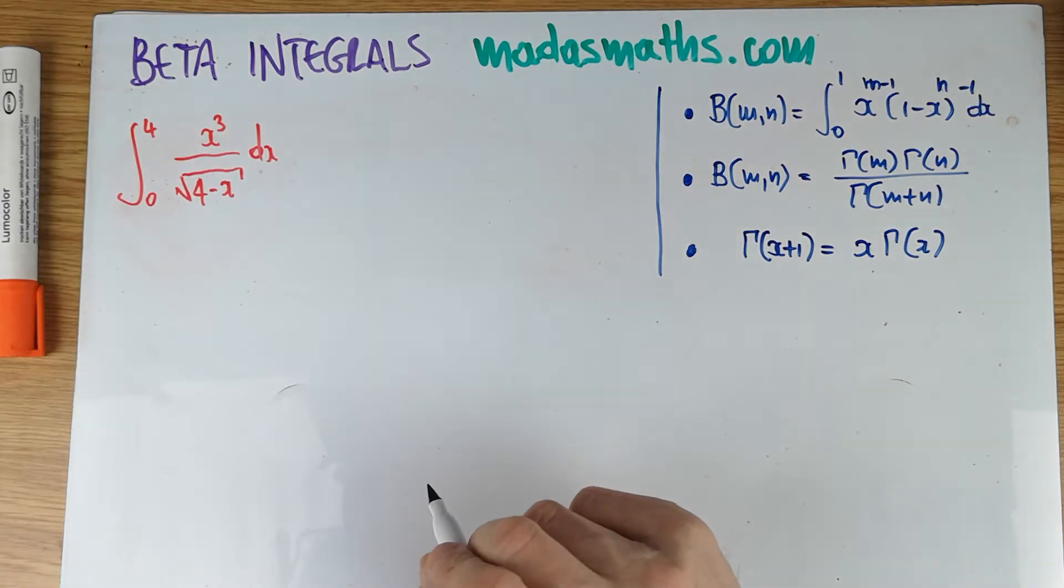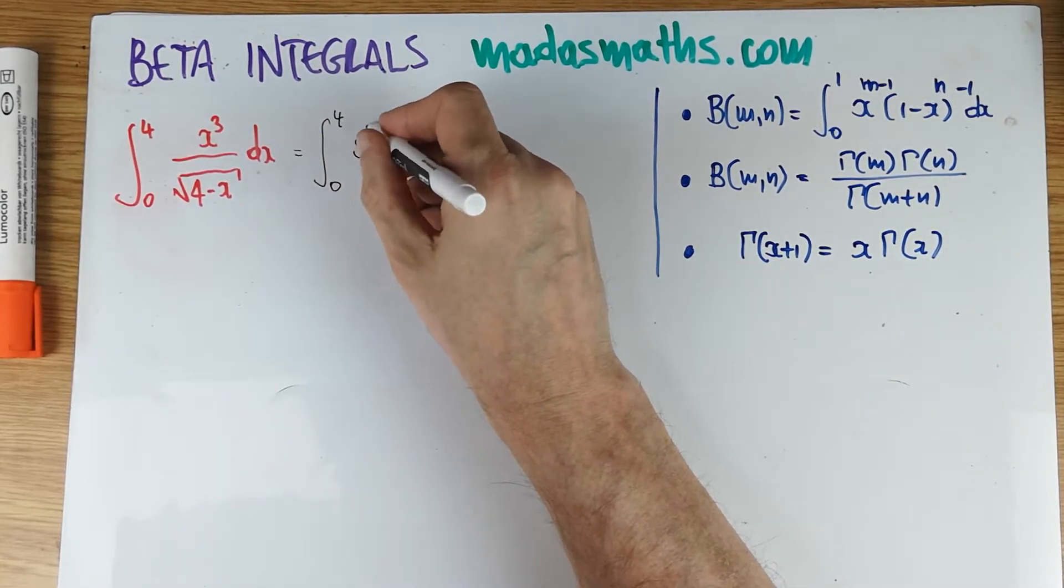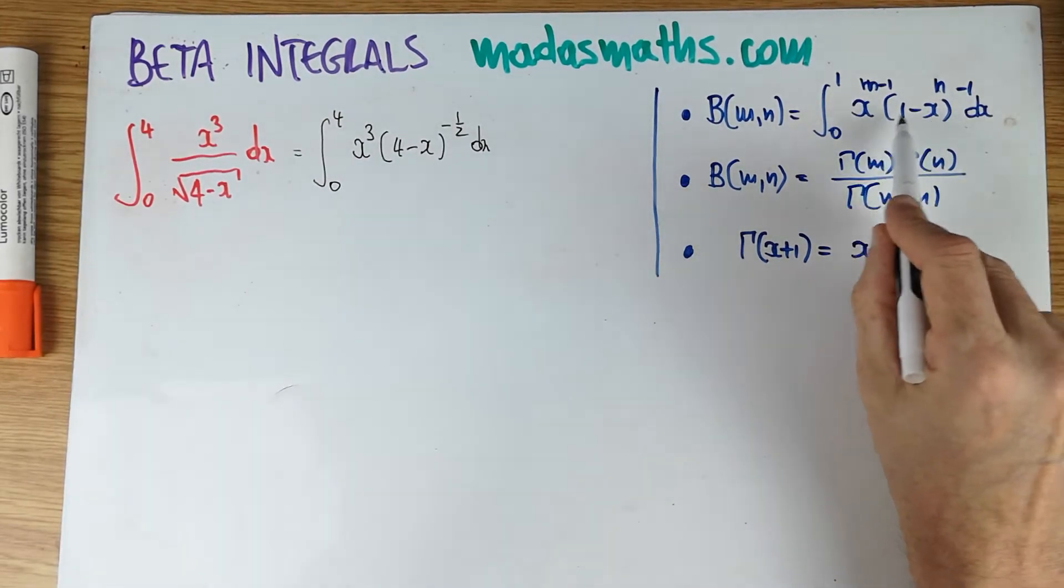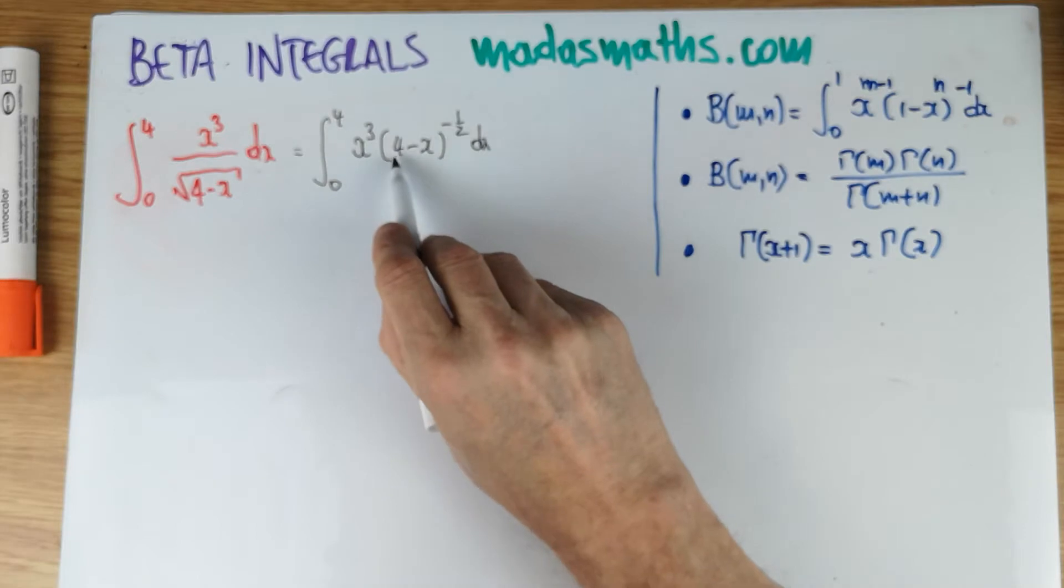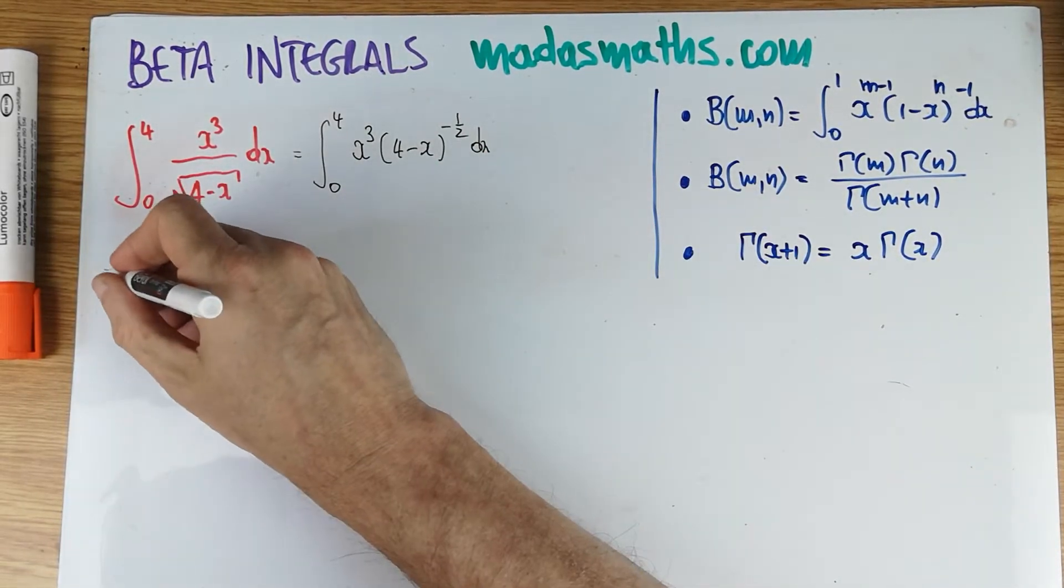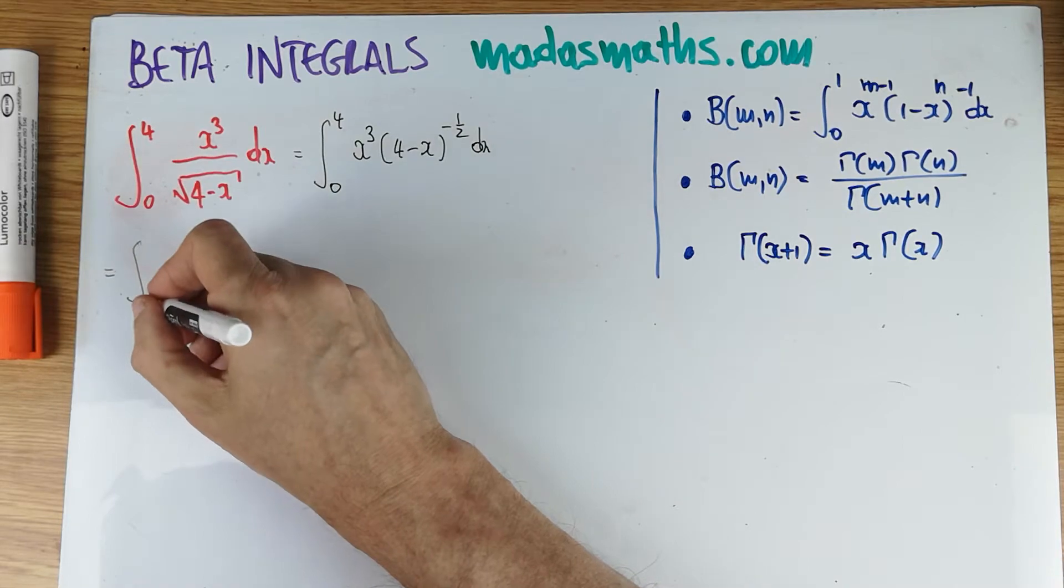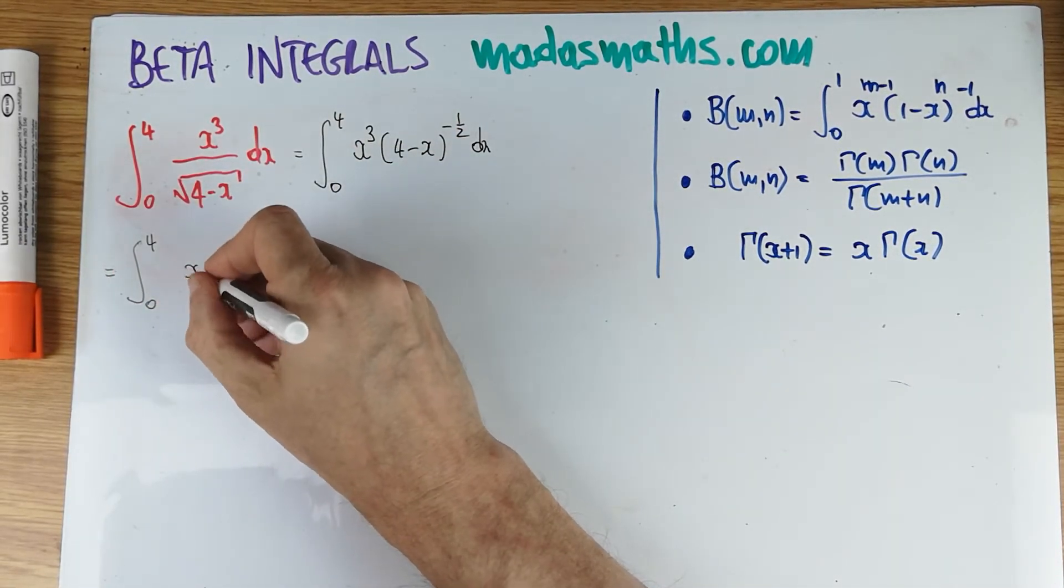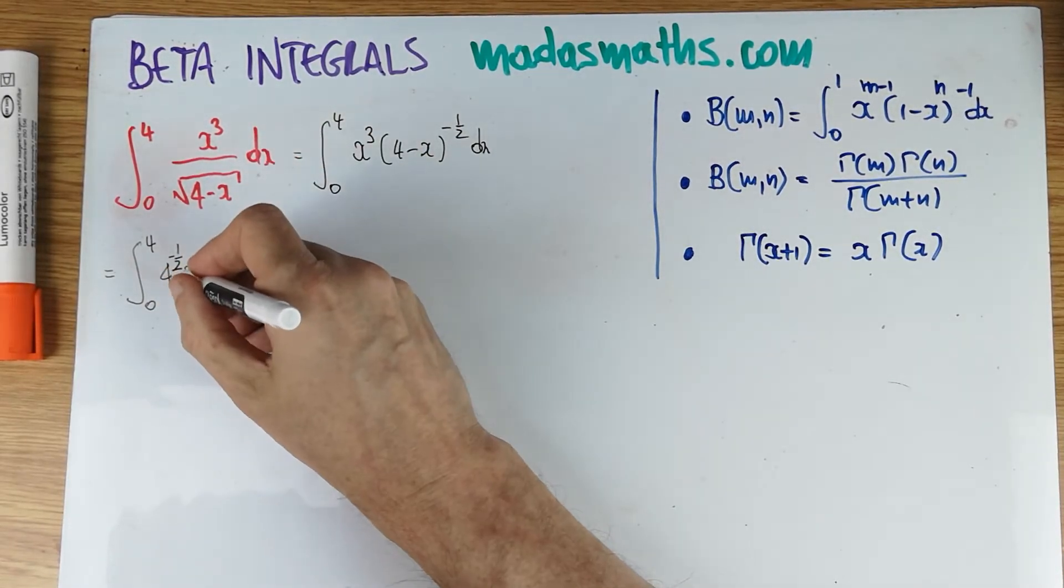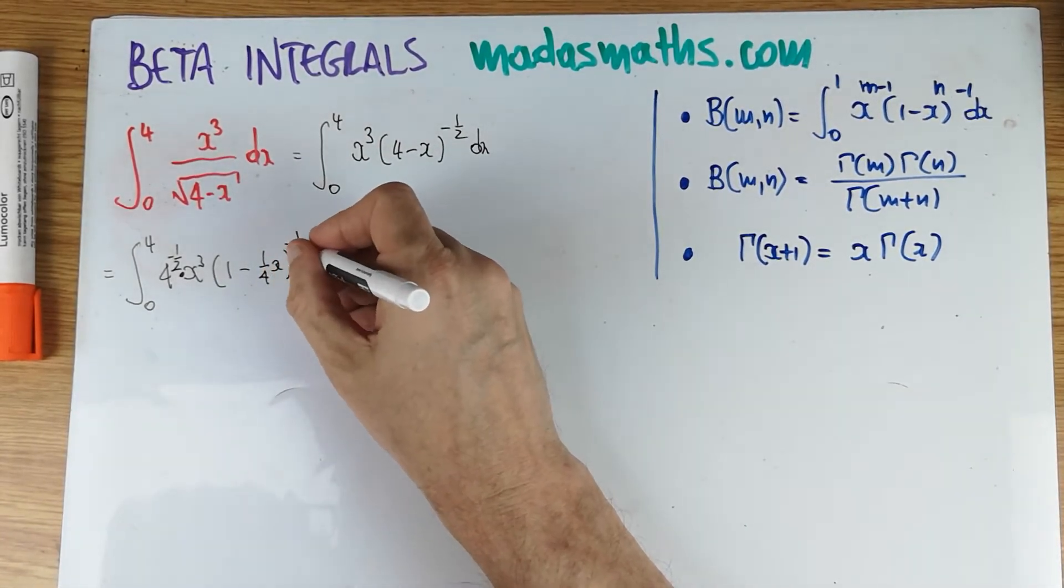Okay, so this particular integral. First of all, let's write it a little bit differently. So 0 to 4, x cubed times 4 minus x to the power of minus a half dx. That resembles this thing here. The only problem is we don't have this 1. And the limit's not 0 to 1, it's 0 to 4, but this 4 might be a clue in there. So let's see what we can do. Well, the obvious thing to do is to factorize the 4 out of this bracket.